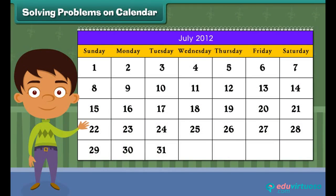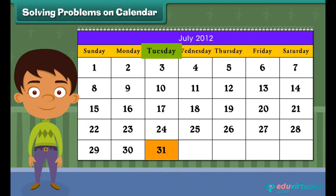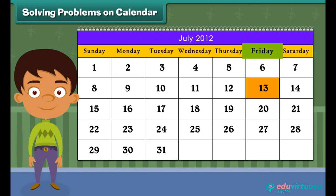Do you know that a calendar solves many problems? You can easily read the days and dates on a calendar. Let us look at the month of July for the year 2012. Can you tell on which day does this month end? Yes, it's Tuesday. What day is it on 13th July? It is Friday. What is the date on the 2nd Saturday? It is 14th July.